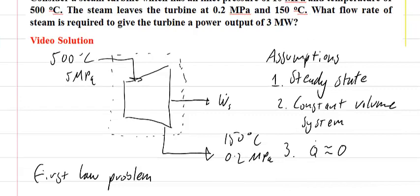To start with, I draw my system. I've drawn my turbine here with inlet conditions of 500 degrees Celsius and 5 megapascals. It leaves at 150 degrees Celsius and 0.2 megapascals. We've got some work happening with the system. It's a turbine generating electricity, so we have work leaving the system.